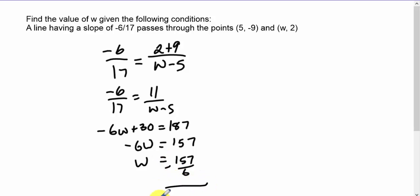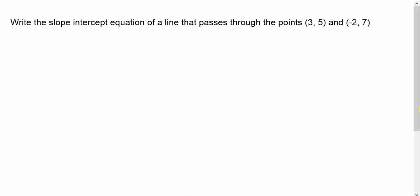Slope-intercept equation of a line. Same situation—I've got two points here. I'm going to go y₂ - y₁, so 7 - 5 over -2 - 3, and that equals my slope, which is -2/5.